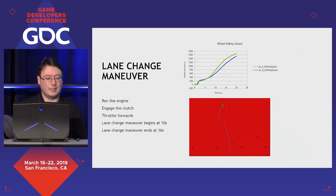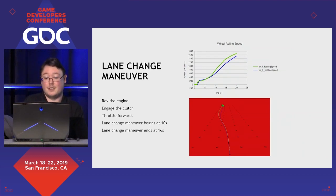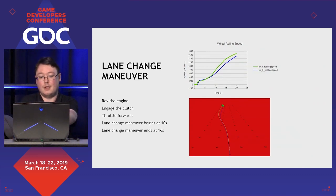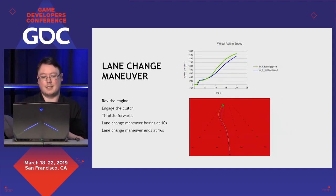Next we looked at the lane change maneuver. We rev the engine, engage the clutch, throttle forwards, began the lane change at 10 seconds and finished it at 16 seconds. The wheel rolling speed is graphed. In the run-up to the lane change, velocity is fairly similar — it diverges again at around seven or eight seconds, which is where we noticed the divergence before. When we perform the steering, we can see that both end up in the same lane, roughly parallel to each other, though not quite in exactly the same position — again because of that small divergence. But it's impressively close.